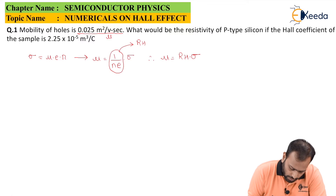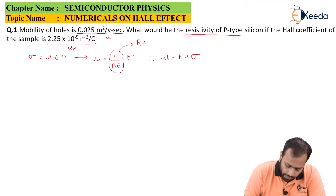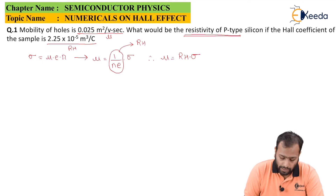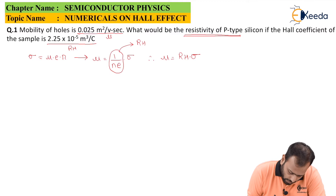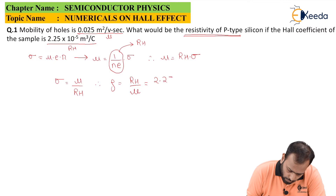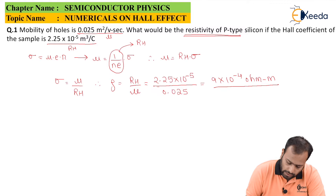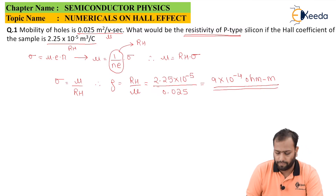Given data: μ_h (mobility of holes) and R_H (Hall coefficient). We need to find the resistivity of p-type silicon. From the formula, σ = μ / R_H, so resistivity ρ = R_H / μ. Plugging in the values: ρ = 2.25 × 10⁻⁵ / 0.025, which gives 9 × 10⁻⁴ ohm meter. This is the value of the resistivity.